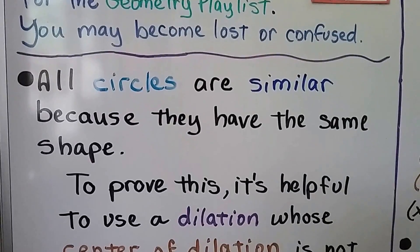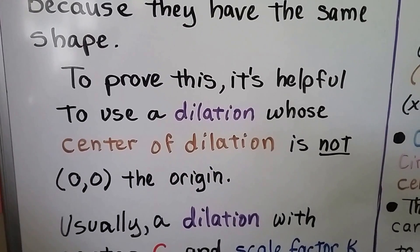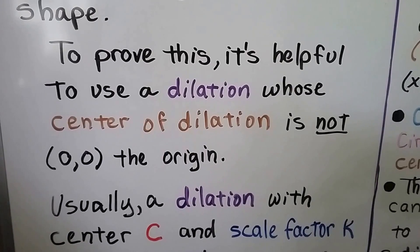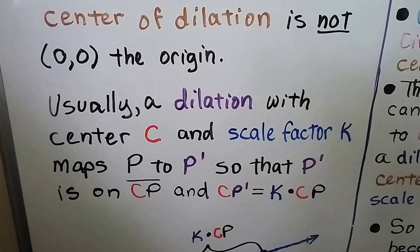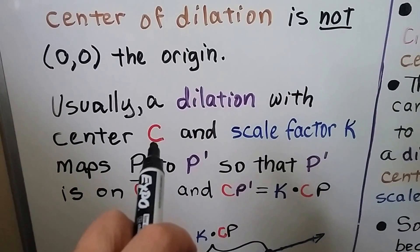All circles are similar because they have the same shape. They're circles. And to prove this, it's helpful to use a dilation whose center of dilation is not zero zero the origin. Usually a dilation with center c and scale factor k, so that would be some point other than the origin.